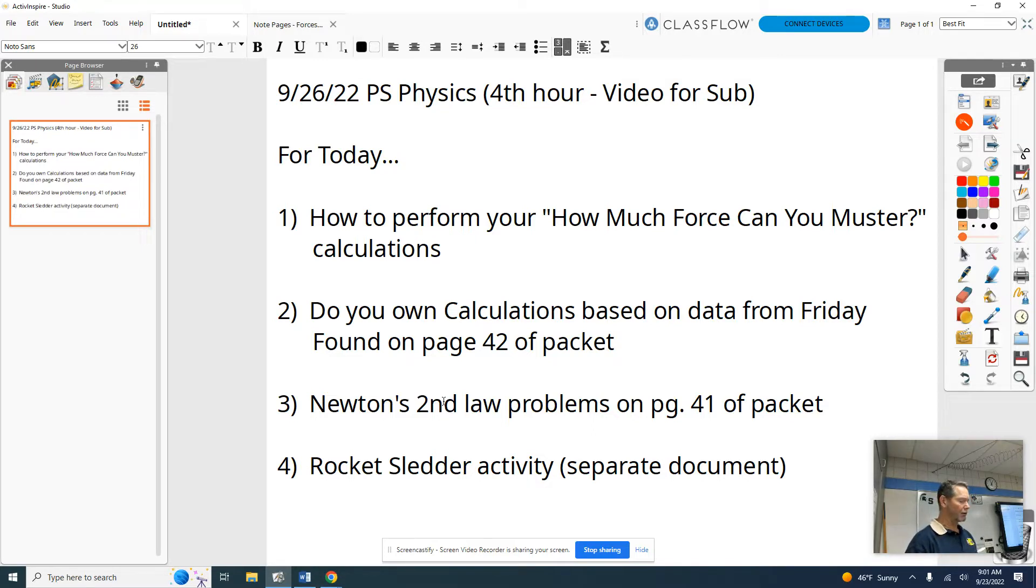The longest portion will be the first part where I show you how to do those calculations on how much force should be mustered. And then the other things you can see on this slide: do your own calculations based on the data that you gathered on Friday that will be found on page 42 of your packet. And then have you do some problems on Newton's Second Law, that's page 41. And then because you're going to finish up those activities fairly quickly, I'm going to give you an additional thing to do, a rocket sledder activity. It's not in your packet. It's something the sub will give you, and that should complete today's activity.